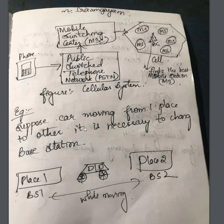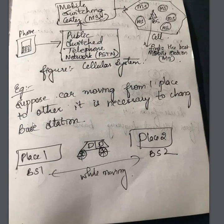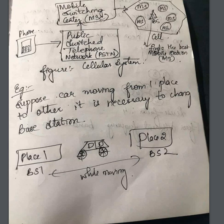Now consider an example: a car is moving from one place to another. It is necessary to change the base station because networking is limited to a certain range of distance. As the car moves from one place to another and goes out of range, the base station needs to be changed.